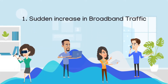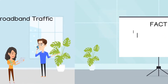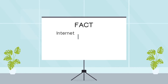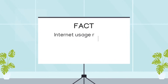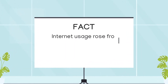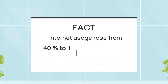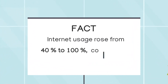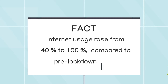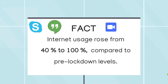Challenge 1: A sudden increase in broadband traffic. Due to the pandemic, internet services have seen rises in usage from 40% to 100% compared to pre-lockdown levels, and services like video conferencing have seen about 10 times increase in usage.